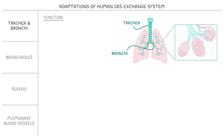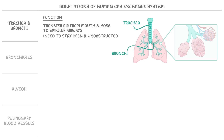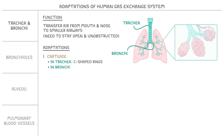Starting with the trachea and bronchi, the function of these airways is to transfer air from our mouth and nose to the smaller airways in our lungs, so they need to stay open and unobstructed to allow air to pass easily. They have several adaptations for this. First, to prevent them from collapsing, the trachea and bronchi are reinforced with cartilage. In the trachea, this cartilage is arranged in C-shaped rings, while in the bronchi the cartilage is more irregularly shaped.